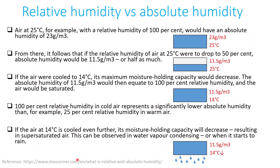Here are some examples. At 25 degrees with 100% relative humidity, we will have an absolute humidity of 23 grams per cubic meter. If we keep the temperature constant at 25 degrees and reduce the relative humidity to 50%, this means we have an absolute humidity of 11.5 grams per cubic meter, basically half. With this absolute humidity of 11.5 grams per cubic meter, if we decrease the temperature from 25 degrees to 14 degrees, we will end up having 100% relative humidity at 14 degrees Celsius. This is because the maximum moisture holding capacity of air decreases with a decrease of temperature.